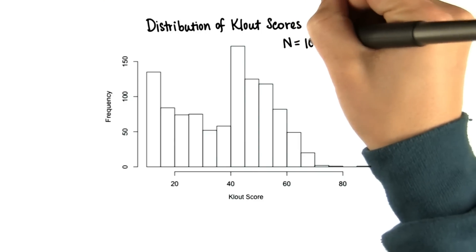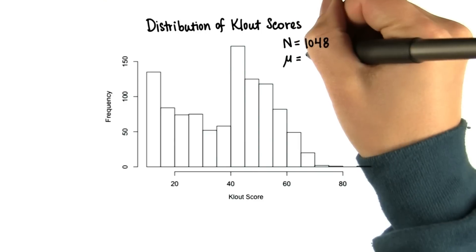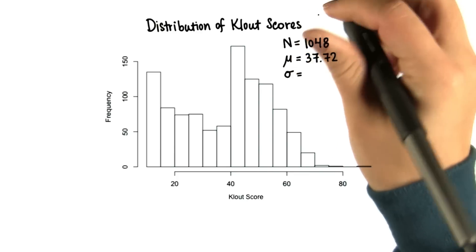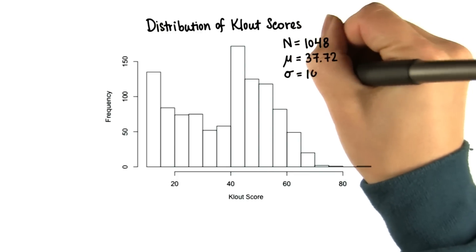The number in this population was 1,048. The mean clout score was 37.72, and the population standard deviation was about 16.04.